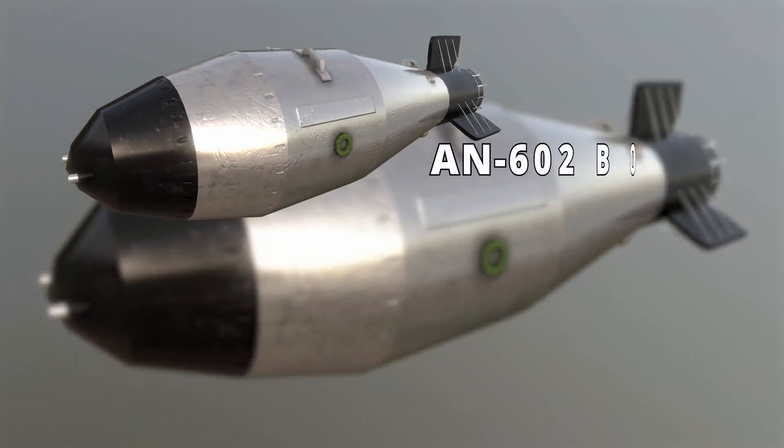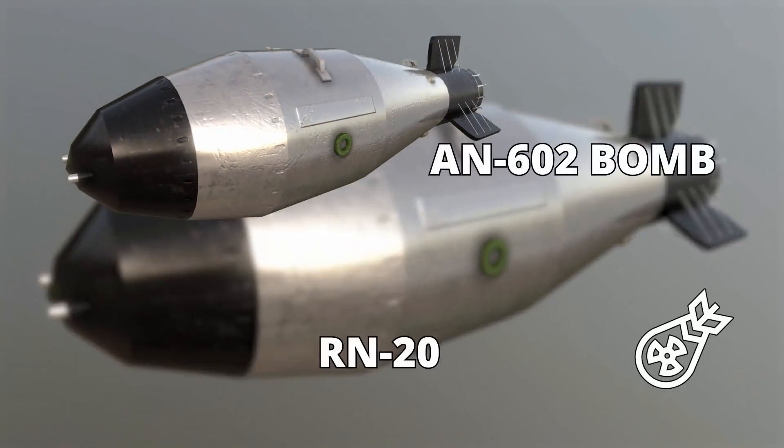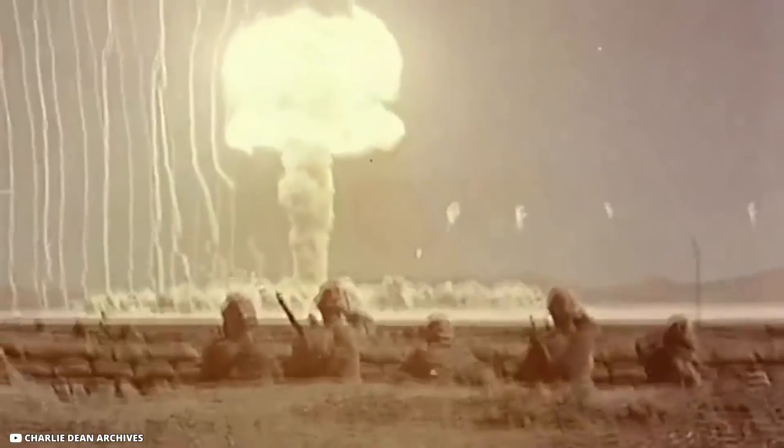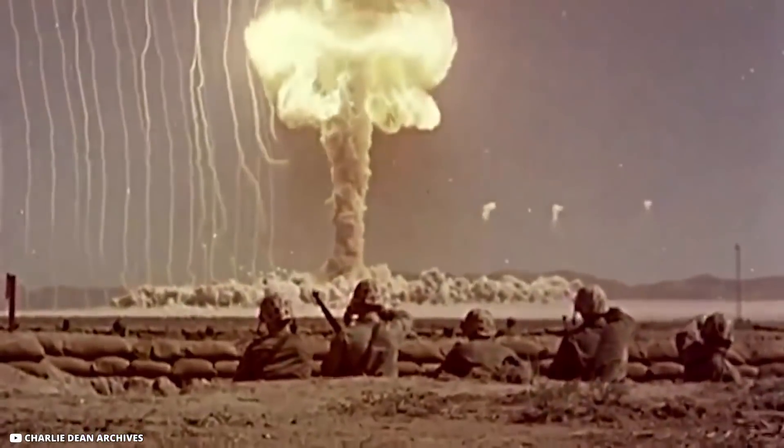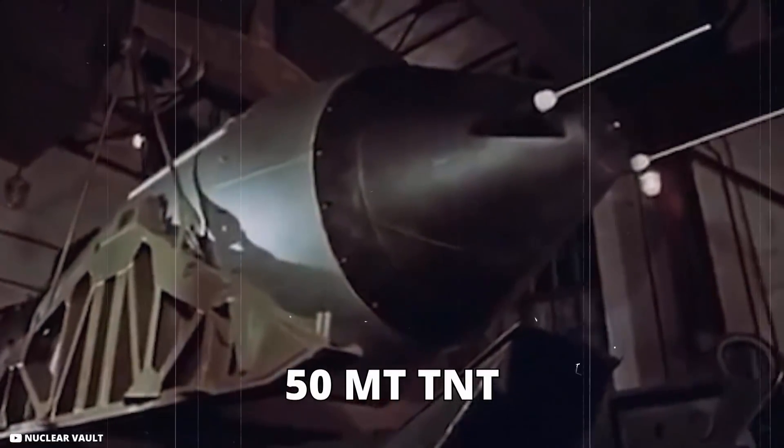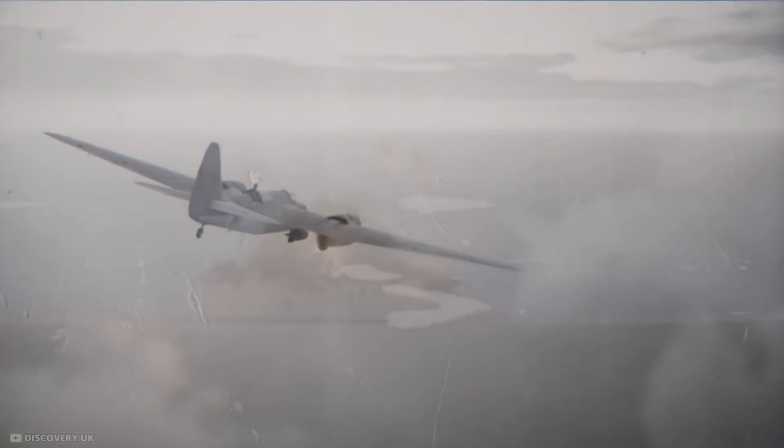Tsar Bomba was an AN-602 bomb that was a version of the RN-202 device that was developed in the mid-1950s, where the US possessed nuclear superiority and both bombs were to be used as nuclear deterrents against the Western world. The bomb weighed over 27,000 kilograms and produced more than 50 megatons of TNT, ten times the combined strength of all conventional explosives used throughout World War II.